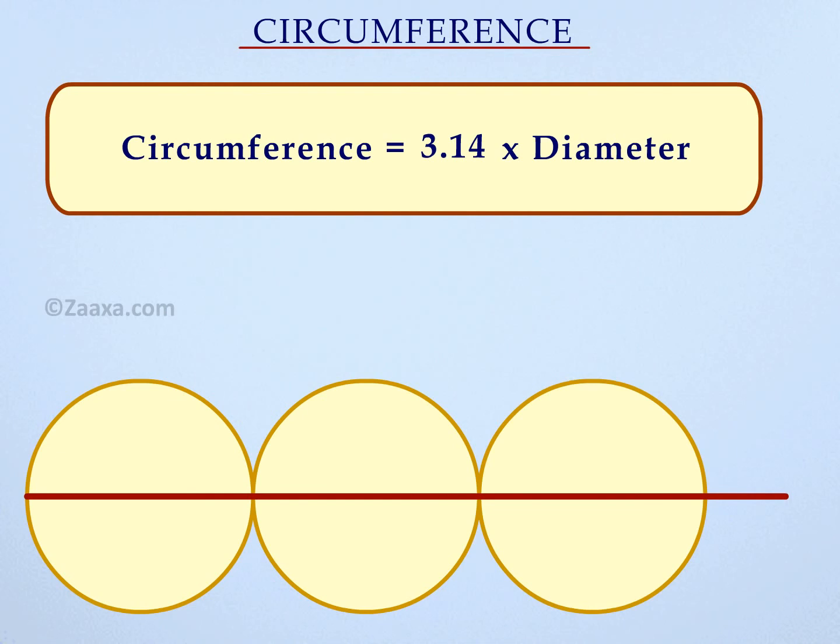This constant value is denoted by pi. The value of pi is taken as 3.14 or 22 over 7.